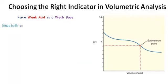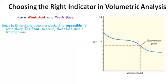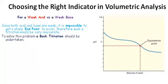For a weak acid versus a weak base, since both the acid and base are weak, it's impossible to get a sharp endpoint. As you can see, there is no real sharp drop. Therefore, such a titration would be very inaccurate. To solve this problem, a back titration should be undertaken.